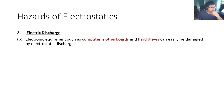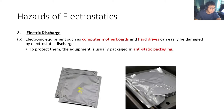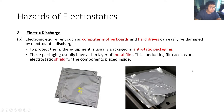The third example where electric discharge can be dangerous is for electronic equipment. Computer motherboards and hard drives can be easily damaged by electrostatic discharge. To protect them, the equipment is usually packaged in anti-static packaging. These packages usually have a thin layer of metal film, and this conducting film acts as an electric shield for the components placed inside.